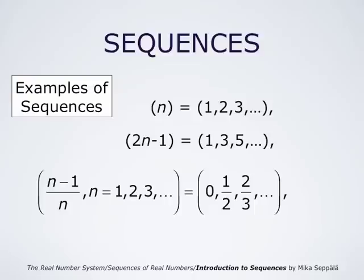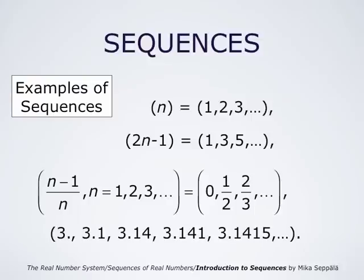The sequence (n-1)/n, for n = 1, 2, 3, and so forth, is 0, 1/2, 2/3, and so forth. This is an example of a sequence defined by a formula. The sequence 3.3, 3.14, 3.141, 3.1415, and so forth is not defined by a similar formula as the previous sequence — we will get to this sequence in a moment.